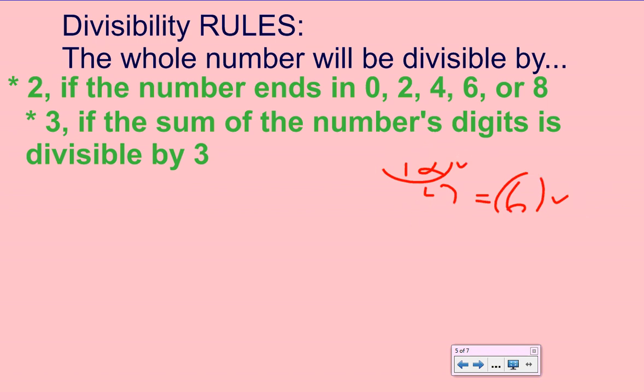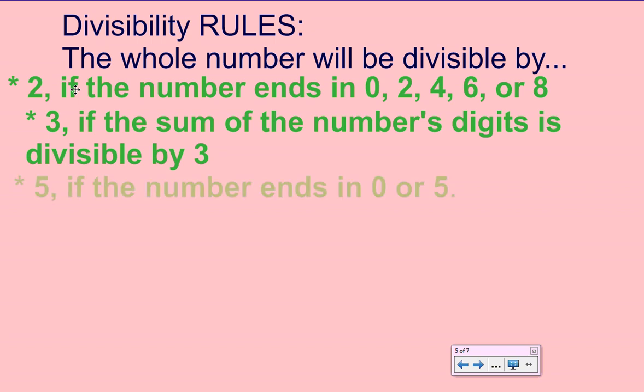That's how we use that particular rule to check for divisibility by 3. Next, a whole number is divisible by 5 if it ends in a 0 or 5. So all you have to do is look at the last digit — if it's a 0 or a 5, then it's divisible by 5.